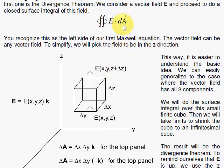And their normals point perpendicular to each panel and away from the inside. Notice that when I do my dot product, I'm only going to have a contribution from the top and the bottom panel because that's where the electric field points here with the normal or here against the normal.